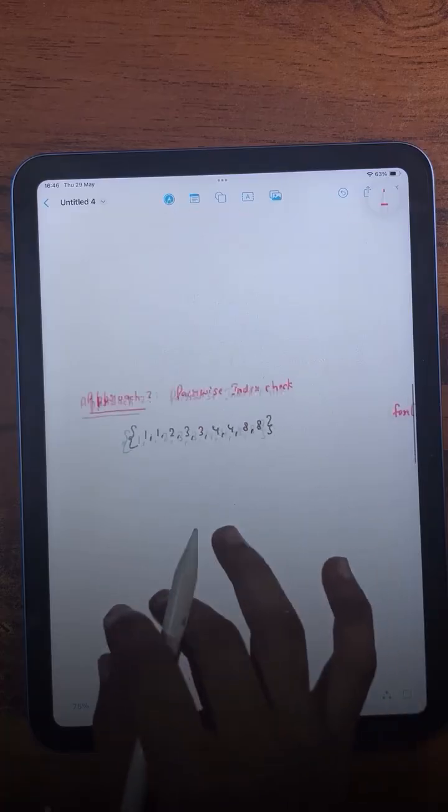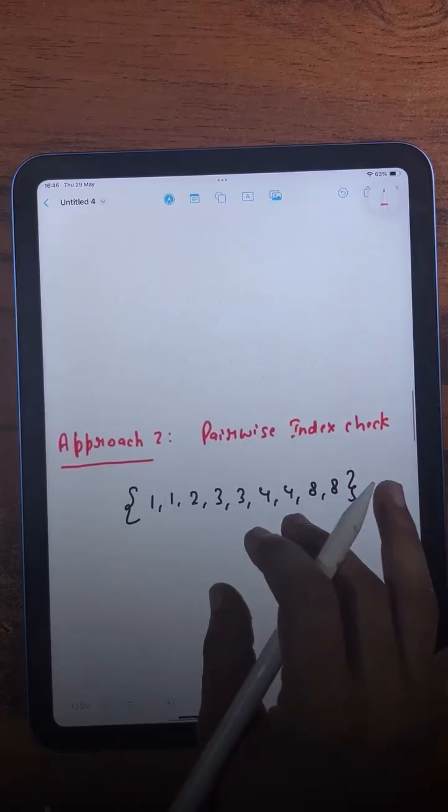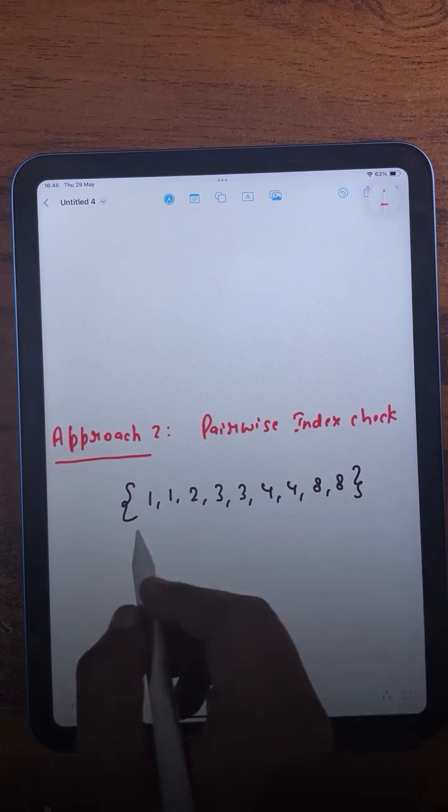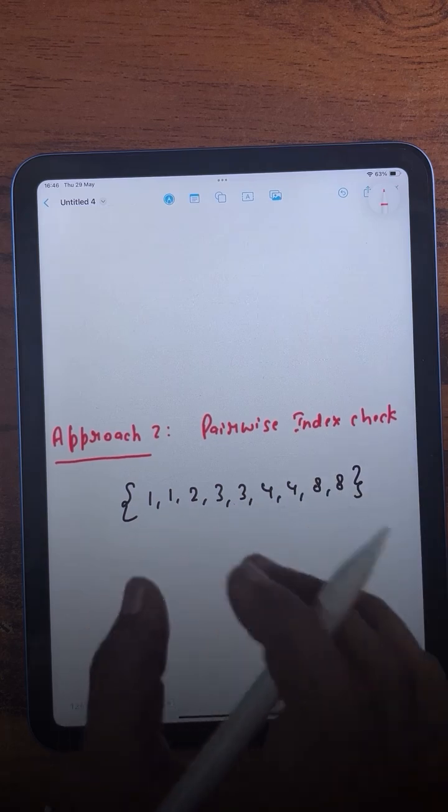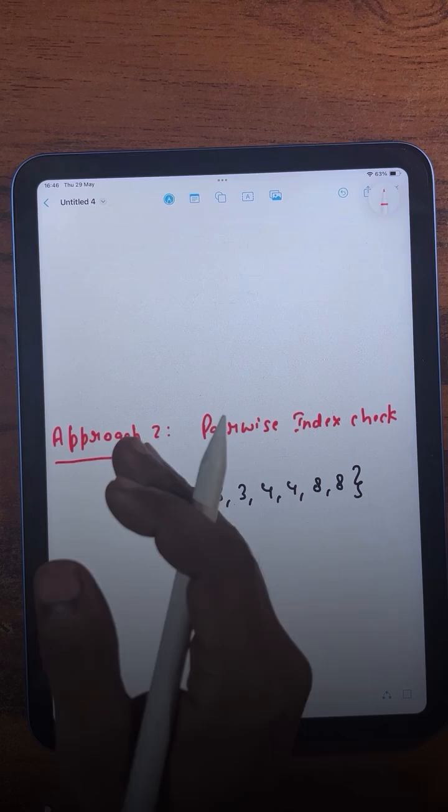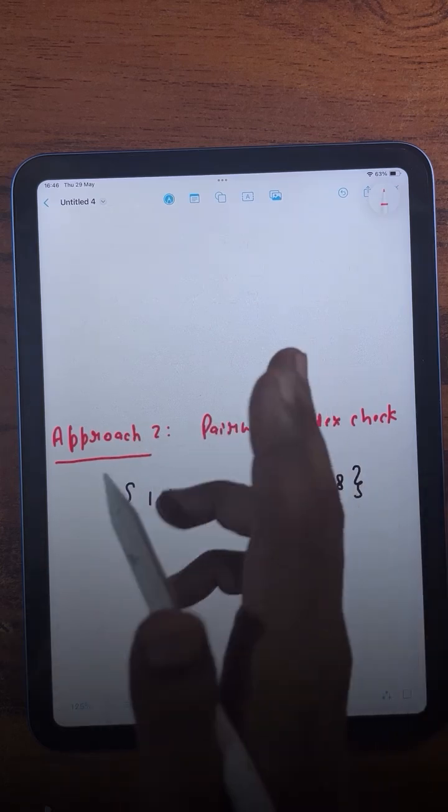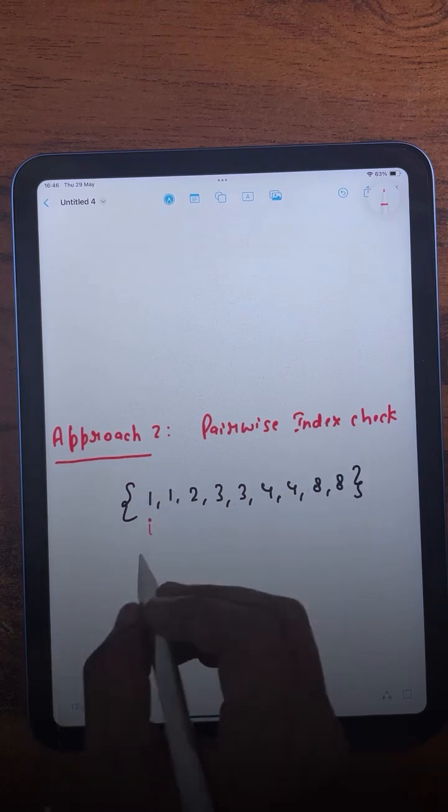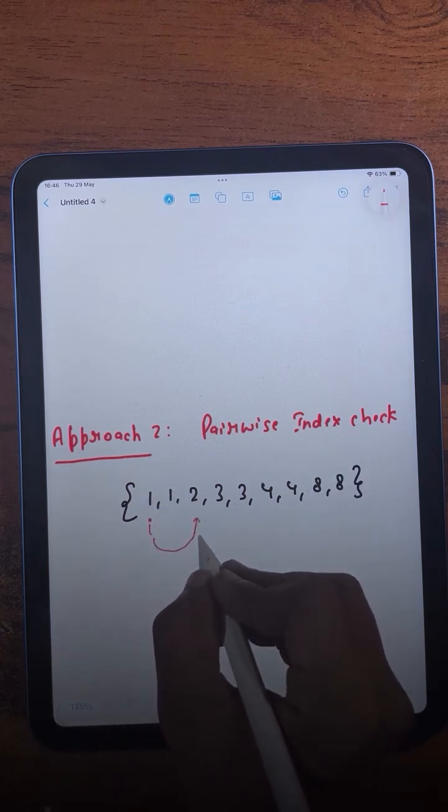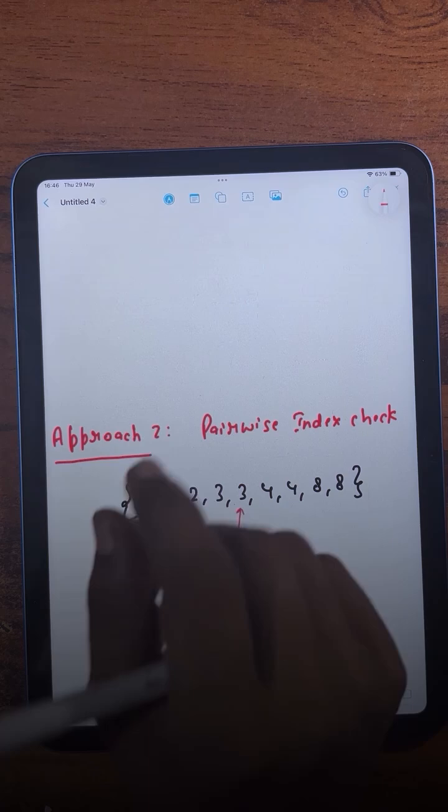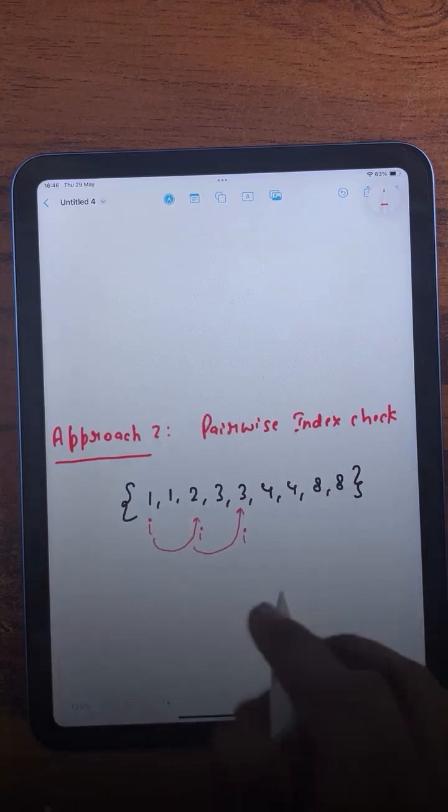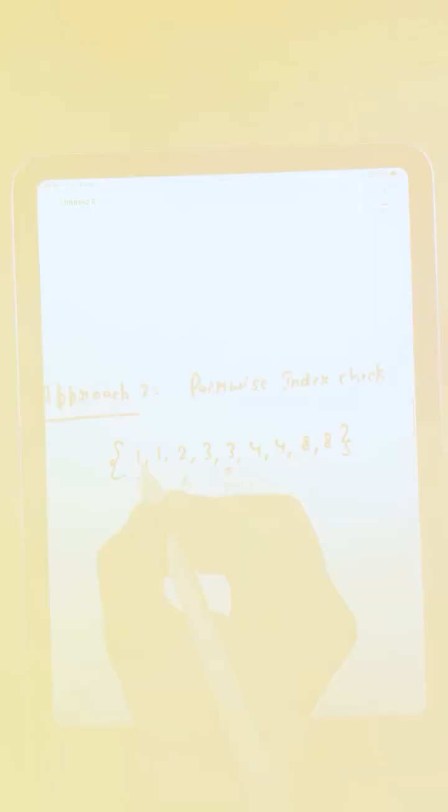Now coming to the second approach: pairwise index checking. Because we know the array is sorted and the elements will come in pairs, we will be iterating over the array, and every time I will increase my counter by two. So for example, if in the first iteration I am here, then in the second iteration I will be at this position. Wherever the first mismatch lies, that is going to be the answer. For example, I will start from here and check: is this element equal to this element? Condition true. I will move ahead.